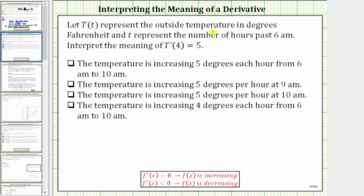Let big T of t represent the outside temperature in degrees Fahrenheit, and little t represent the number of hours past 6 a.m. Interpret the meaning of big T prime of four equals five.